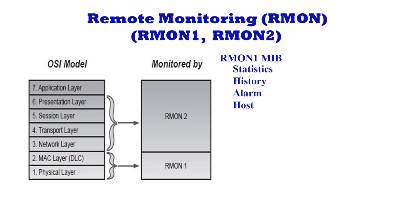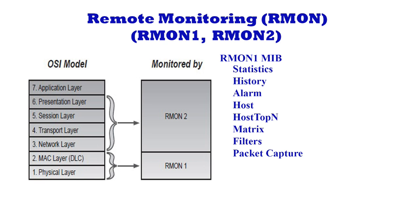Host: contains statistics associated with each host discovered on the network. Host Top N: prepares tables that describe the top hosts. Matrix: stores and retrieves statistics for conversations between sets of two addresses. Filters: enables packets to be matched by a filter equation for capturing or events. Packet Capture: enables packets to be captured after they flow through a channel.